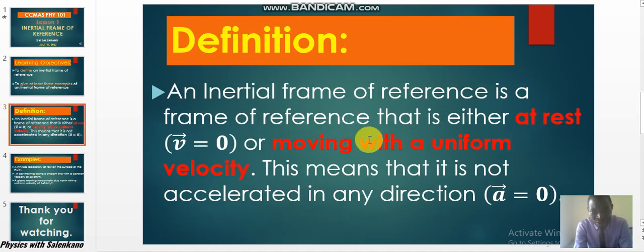Let's see the definition. What is an inertial frame of reference? An inertial frame of reference is a frame of reference that is either at rest, and when it is at rest we know the velocity is zero, or that it is moving but with uniform velocity.